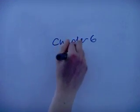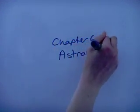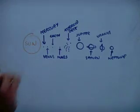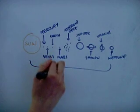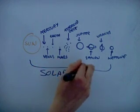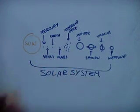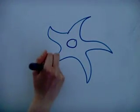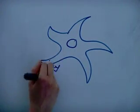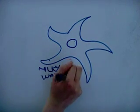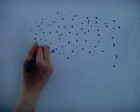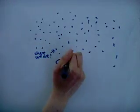Chapter six: astronomy. Earth is one of the eight planets in the solar system, which is part of the Milky Way. The Milky Way is a galaxy and is one in millions and millions of galaxies in the universe.